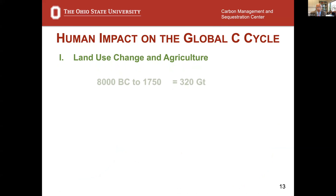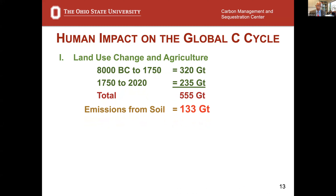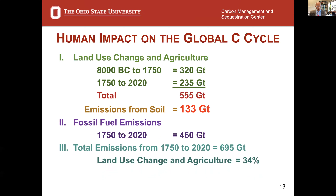The human impact on the global carbon cycle is tremendous. From 800 BC to 1750, approximately 320 gigatons were lost. From 1750 to 2020, another 235 gigatons, giving a total loss from the terrestrial biosphere of about 560 gigatons. Emissions from soil alone are estimated between 100 and 135 gigatons, and fossil fuel emissions since 1750 are about 460 gigatons. Total since 1750: 695 gigatons; total since the beginning of agriculture: about 1,000 gigatons. It is a very drastic carbon footprint from anthropogenic activity.